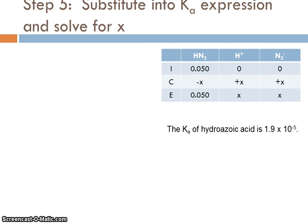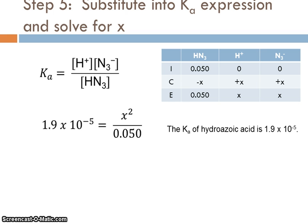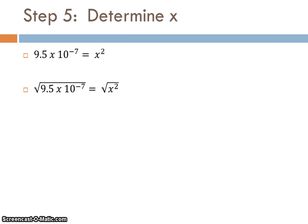So we can go on, substitute into our Ka expression, and solve for X. We were given the Ka of this acid at the beginning of the problem. So really, all we have to do is solve for X now. It's so much easier if we don't have to use the quadratic equation, unless you really want to. Go ahead and do that. You'll get substantially the same answer, but it'll take you longer. And we'll just rearrange, isolate X squared, take the square root of both sides, and we end up with a value for X being 9.7 times 10 to the minus 4 molar. Great.